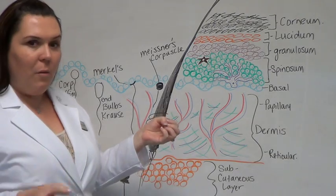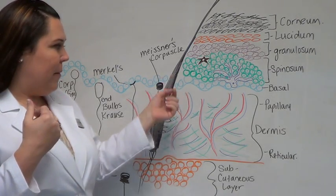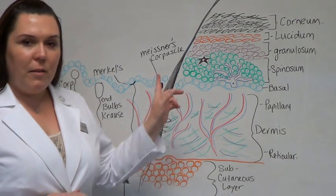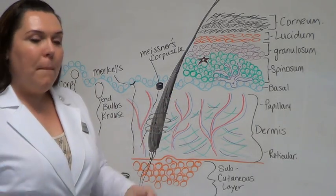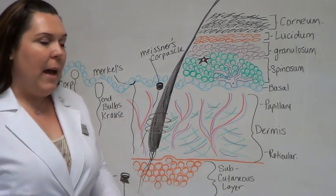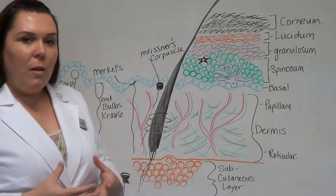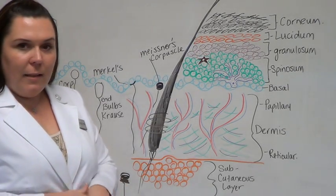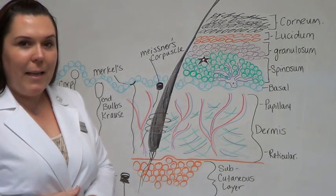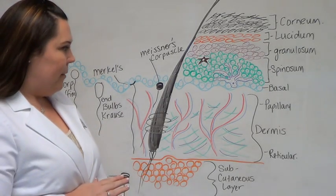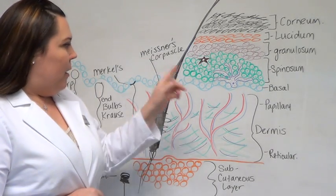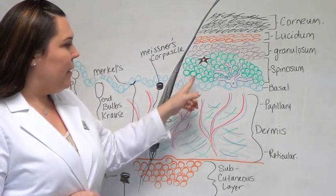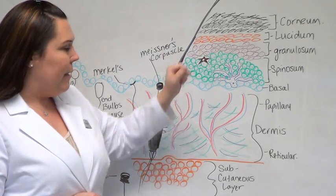One is a daughter cell, which will continue to move up through the epidermis. The mother cell stays in the basal to continue multiplying. We always have to have a continual renewal of skin because we're constantly shedding from the top. So we need skin cells to replace those dead skin cells. These are constantly replacing the skin at the top.